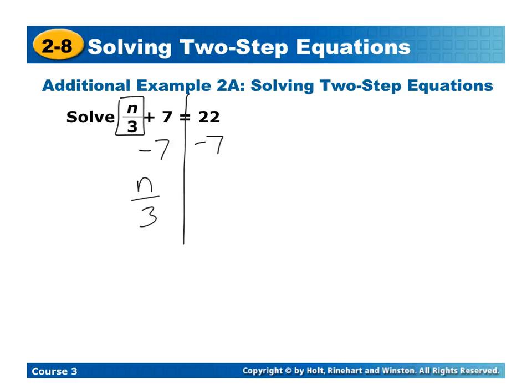Now I have n over 3. And if I did 22 minus 7, I get 15 as an answer. Now since it's n divided by 3, I'm going to multiply both sides by 3. So n is going to equal 45.